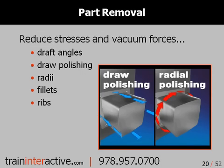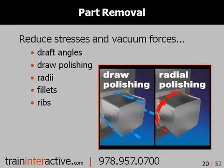Let's revisit the forces that are realized when a part is ejected from an injection mold. The two forces are vacuum and friction. This is why it's important to have some draft angle — any amount of draft, even a quarter of a degree, is better than none. Once the part begins to move off the core, the angled wall with draft will separate from the core, virtually eliminating the vacuum forces holding the part to the core.